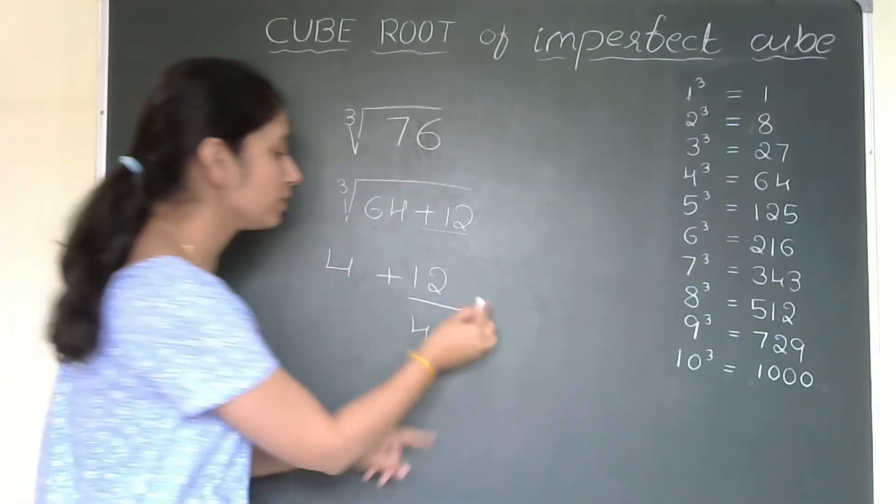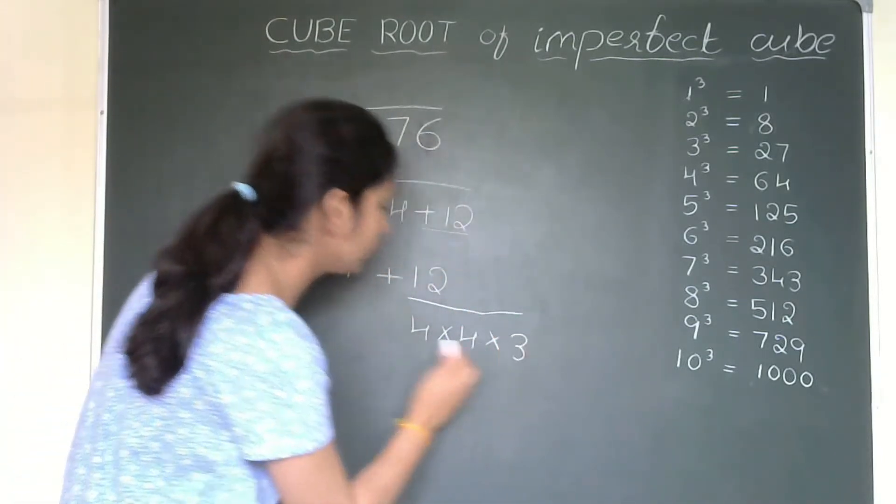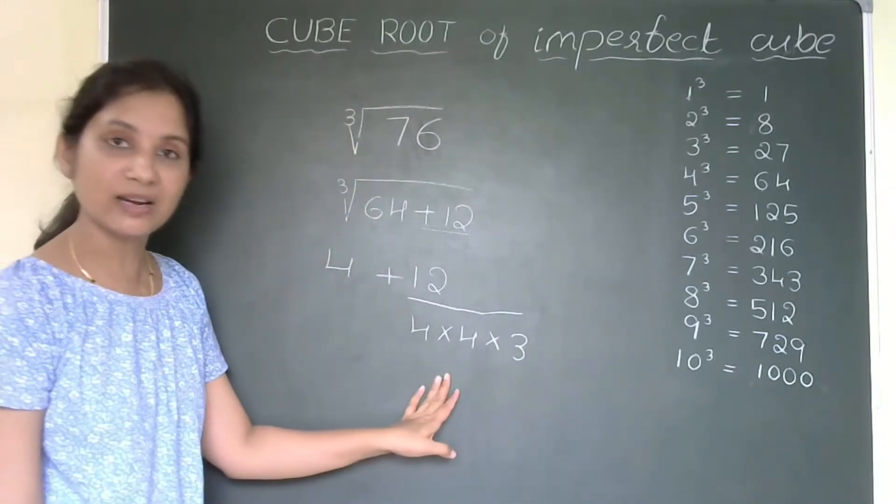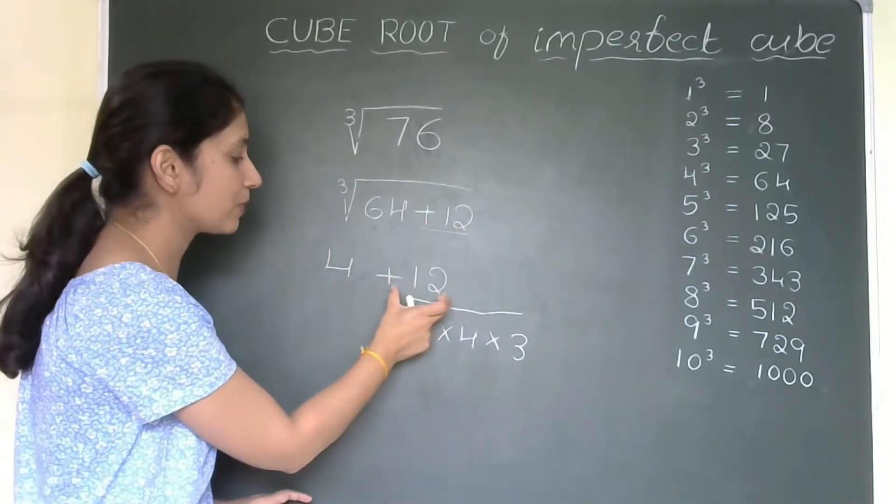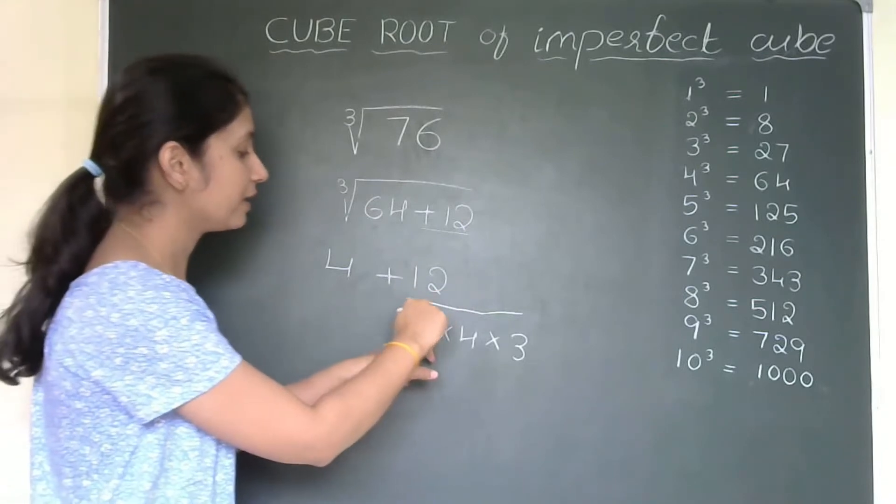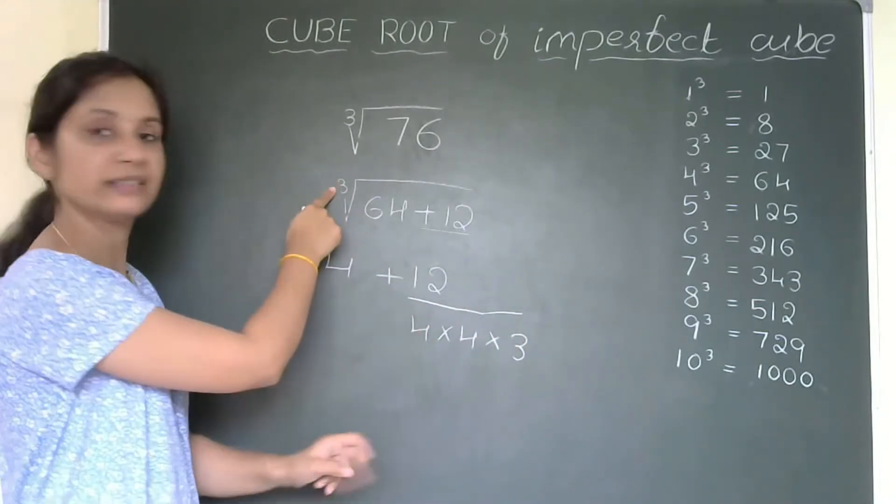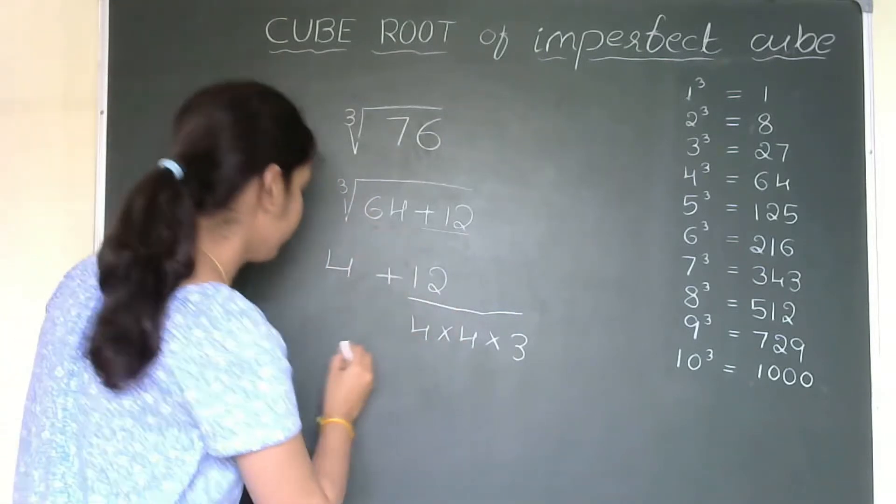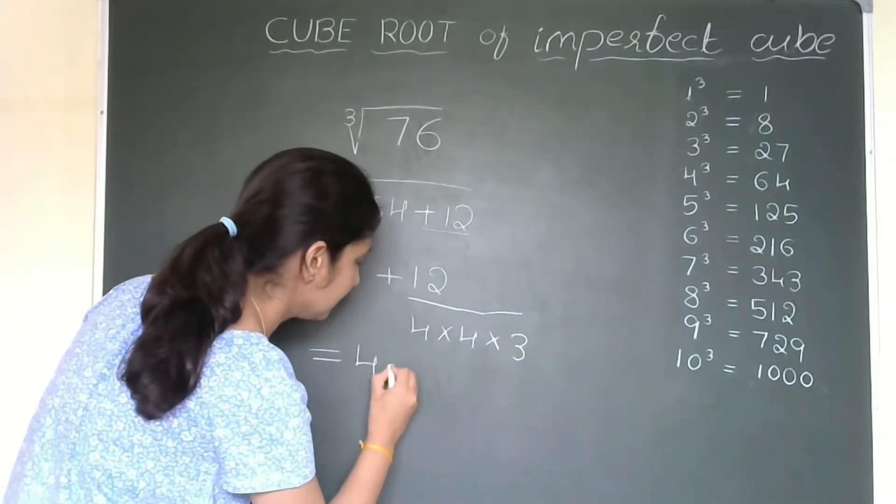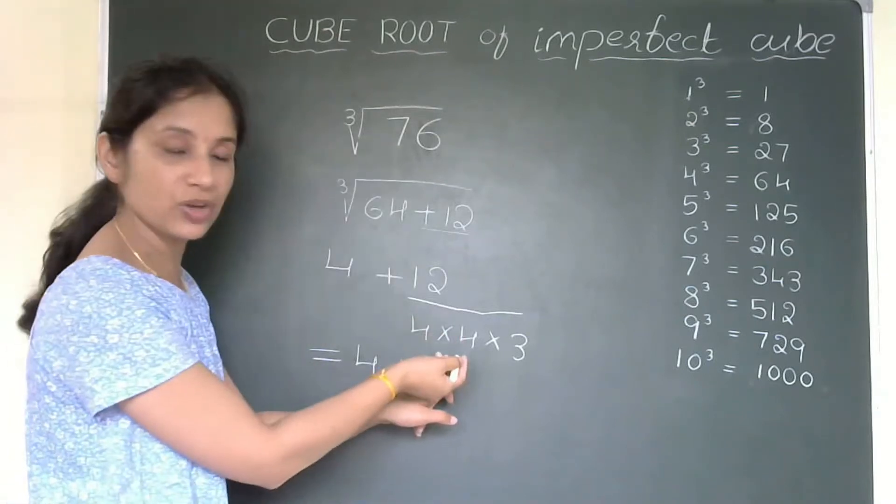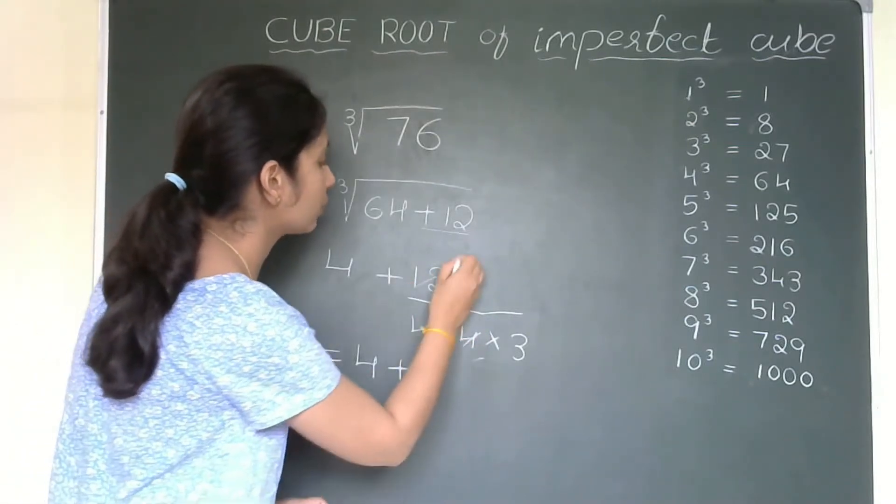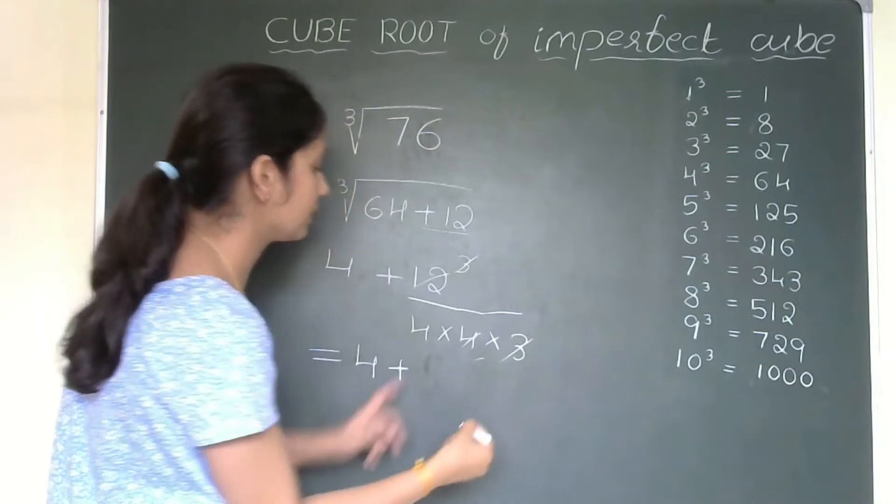4 multiplied by 4 you will write and this 3, that means cube root. So, this 3 you will multiply with 4 and 4. I will tell once again, this plus 12 you will write here and divided by 4 multiplied by 4 multiplied by 3 you will write. And then the next step, 4 as it is plus, how will you solve this? 4 times 4 times 3, so 1 by 4 you will be left with.